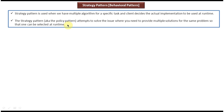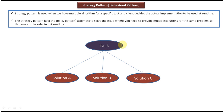We will see one diagram so that you will understand this explanation very clearly. Suppose we have one task, and to finish the task we can use solution A, solution B, or solution C. Using these three solutions we can achieve this task. As per the strategy design pattern, which solution should be used will be decided by the client at runtime.